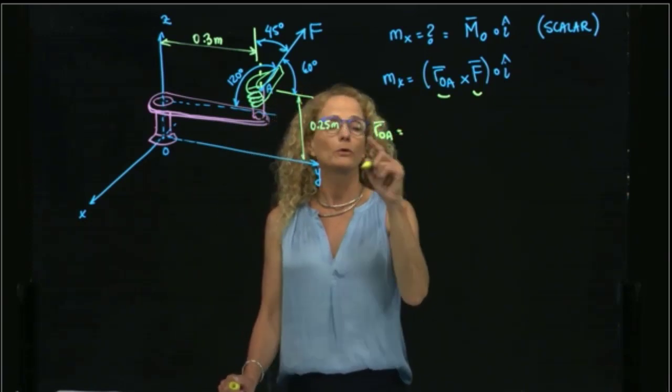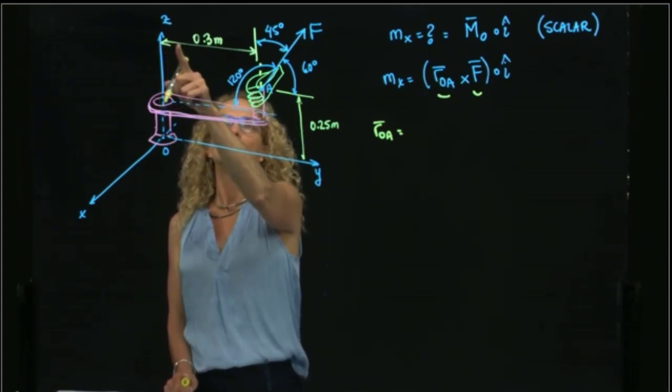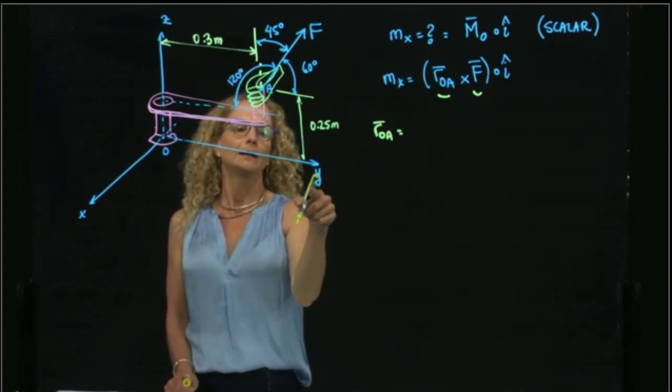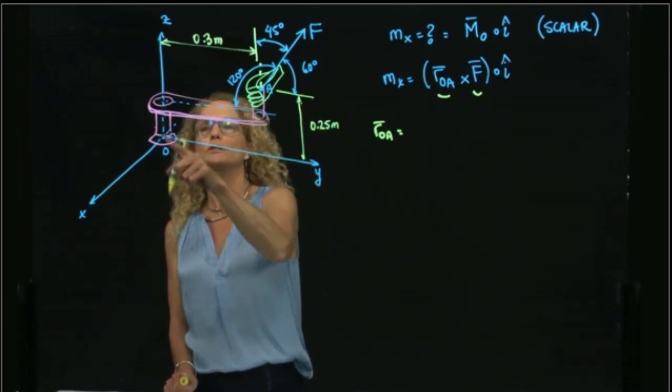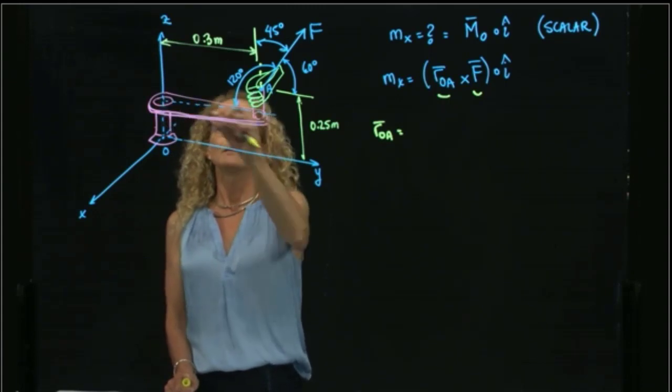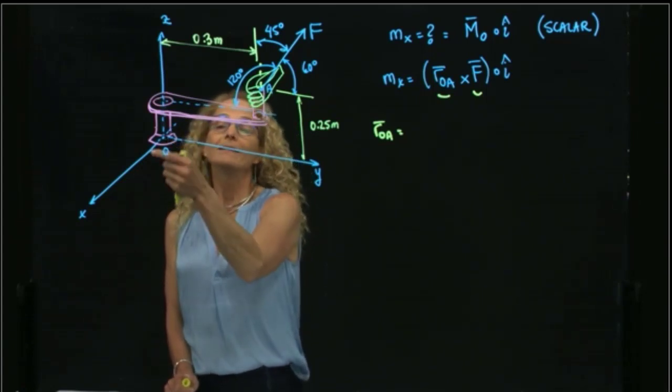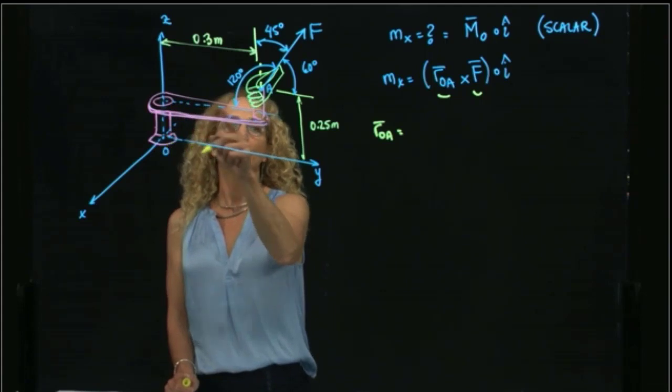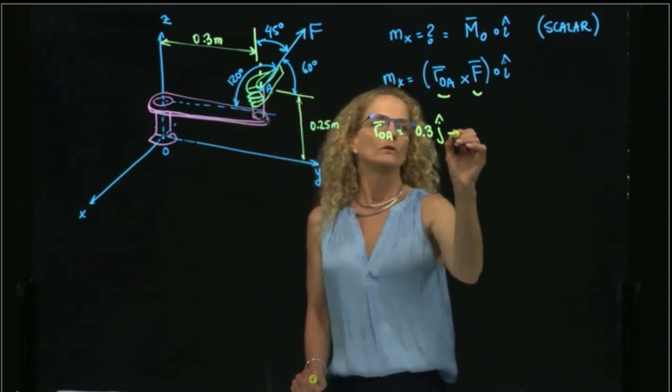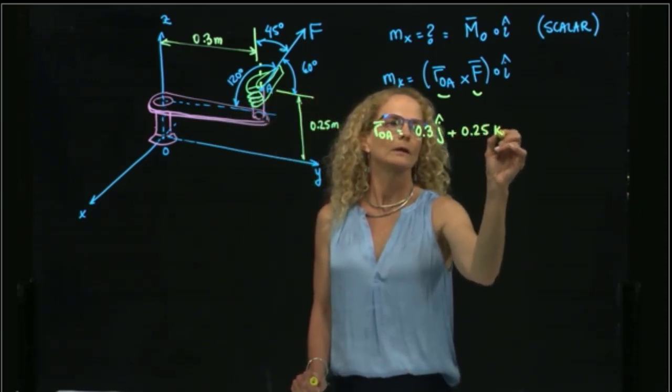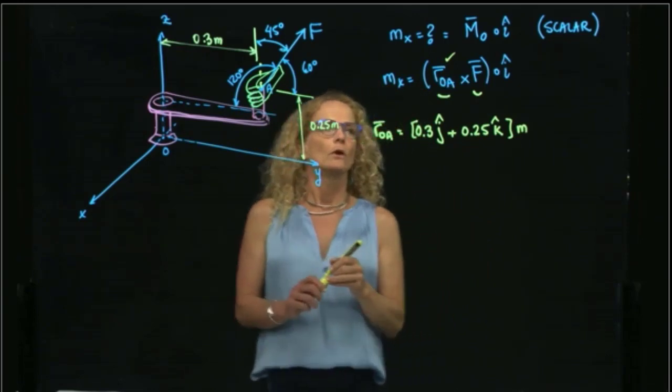ROA will be the position vector from point O to point A. The distances are given. We see that we have to cover 0.3 in J, in the Y direction, and 0.5 in K, which is the Z direction. And this link over here is parallel to Y. Therefore, we don't have any distance in the X direction. So we have 0.3 in J plus 0.25 in K, and that is given in meters.